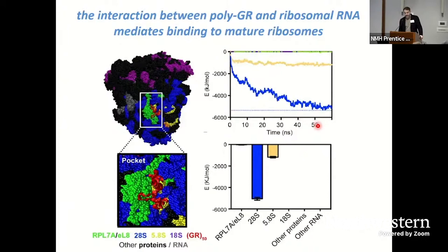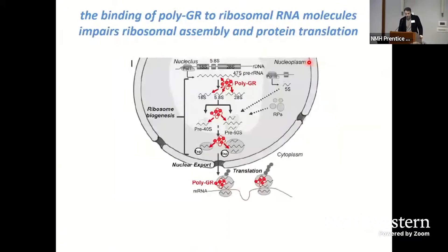We took this a step further and did molecular dynamic simulation analysis to understand the dynamics of the interaction between polyGR and the different components found within the pocket of the fully assembled ribosome. This simulation of the energy of the interaction across time shows that the interaction between polyGR and ribosomal RNA has significantly higher energy than the interaction between polyGR and RPL7A or any of the ribosomal proteins in that region. This suggests that it is the interaction of polyGR with the RNA — rather than with ribosomal proteins — that mediates its binding to the ribosome.